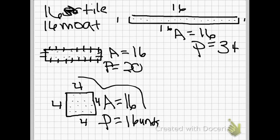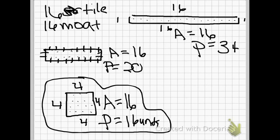Sometimes when you have different shapes, they can have the same area but the perimeter will be different depending on the shape of the rectangle.